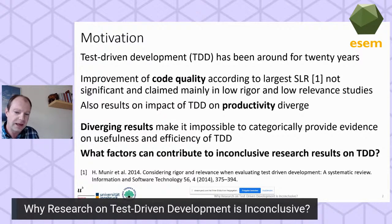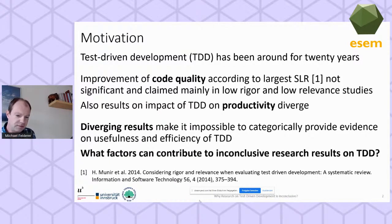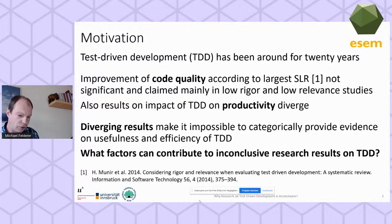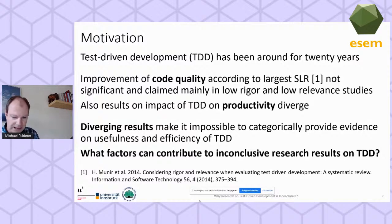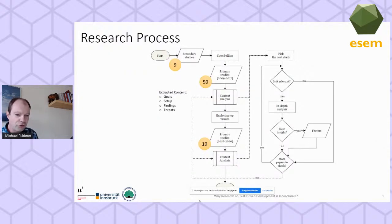The same divergence holds for productivity. These diverging results make it impossible to categorically provide evidence on the usefulness and efficiency of test-driven development. The goal of this research was to identify factors that contribute to inconclusive research results on TDD. This may help guide future research and help practitioners select studies on TDD that are actually relevant to them.